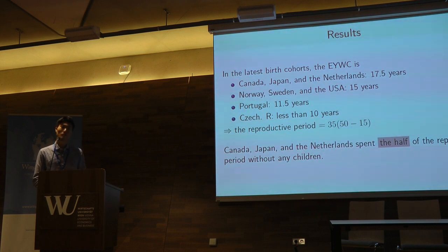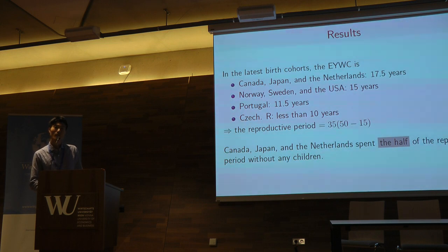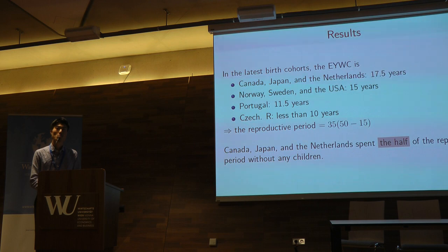This would give you a much better sense of quantum and timing, because otherwise the interpretation at the end of that slide is very confusing — Canada, Japan, and the Netherlands spend half of the reproduction period without children. Imagine a country where 50% of women remain childless and 50% have a child at age 15. Your interpretation would be that the average woman spends half of her reproductive life without children. But this is again a combination of quantum and tempo. So separating these two parts of the index right from the start would make it much easier to interpret and understand what's going on.